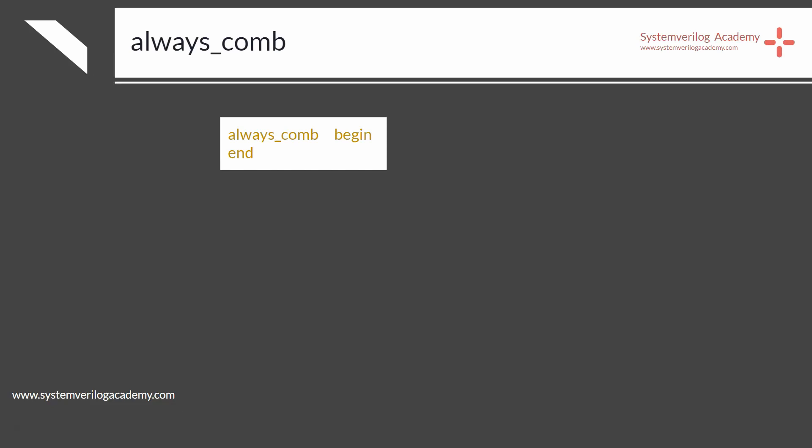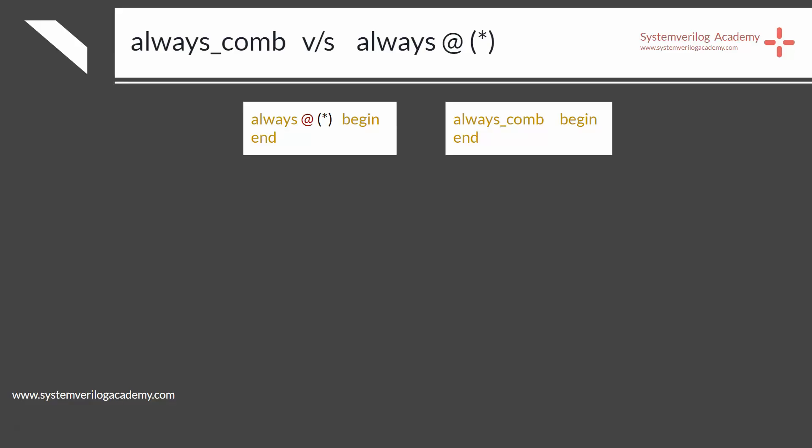If the circuit written within always_comb is inferring a latch, the tool can give a warning or error. Another common confusion is between always_comb and always @(*) in Verilog. While they may appear identical at first, they are not. It is strongly recommended to use always_comb to write a combinational circuit in SystemVerilog instead of always @(*).